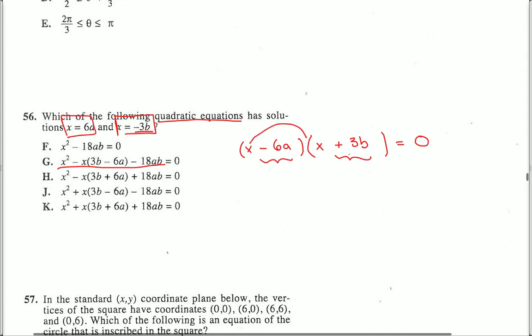Now I'm going to FOIL. First, x squared; outside, 3bx; inside, minus 6ax; last, minus 18ab.